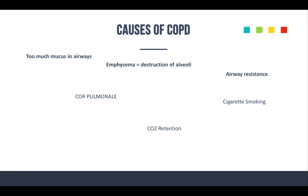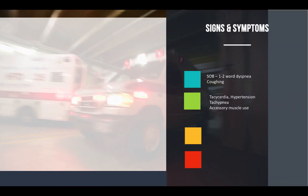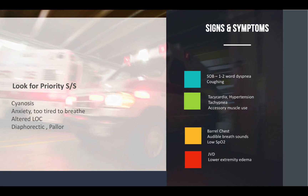Some signs and symptoms — these apply to both COPD and asthma. Patients will only speak to you in one or two word sentences and will be coughing a lot. They'll be tachycardic, maybe even hypertensive, and tachypneic — breathing very, very fast. You'll see accessory muscle use and barrel-chested patients from air trapping. Many times you'll hear audible wheezing without even needing a stethoscope. You'll also see low SpO2 readings, which will indicate how aggressive you need to be with interventions like intubation. You may also see JVD, especially in patients with right-sided heart failure.